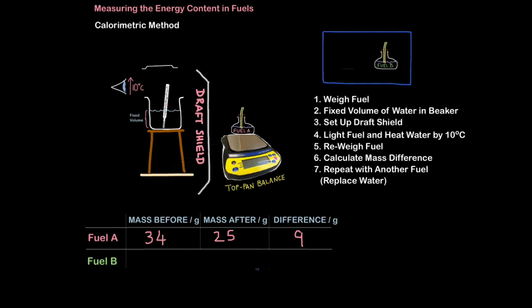So now we do exactly the same with fuel B. Remember to replace the water here and then take the temperature again so you reset the experiment. And also make sure that you have a fixed volume of water, the same amount as last time, because if you put more water in there it would take longer to heat up and that would be an unfair test. So let's take fuel B and weigh it, and let's say that it comes to a mass of 42 grams.